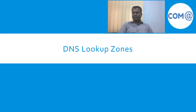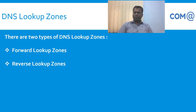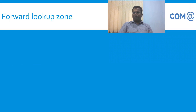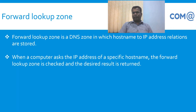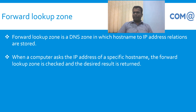We also need to understand DNS lookup zones. There are two types: forward lookup zone and reverse lookup zone. The forward lookup zone resolves names to IP addresses. It maintains host records and A records, so name resolution requests — that is, name-to-IP resolution — are handled by the forward lookup zone.